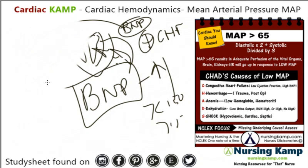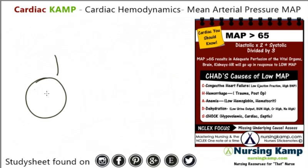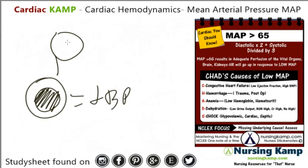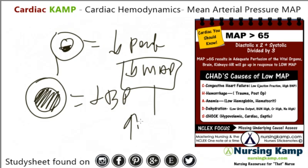Another cause of low mean arterial pressure would be bleeding — that's the B in CHAD's. That makes sense because if you have a filled vessel, you should have a normal blood pressure. But if the vessel is half filled, like in bleeding, you're going to have decreased perfusion and decreased mean arterial pressure. In response to that, the heart rate goes up.